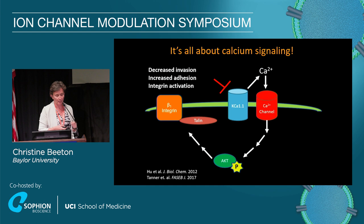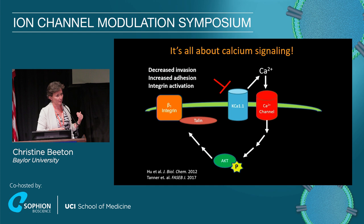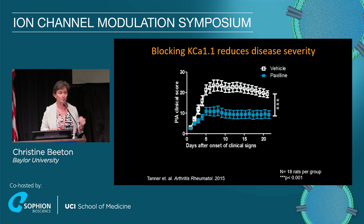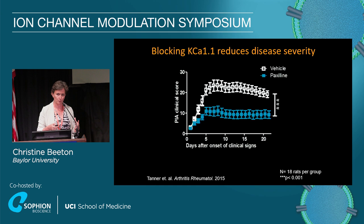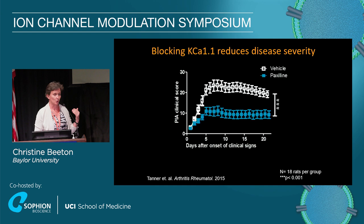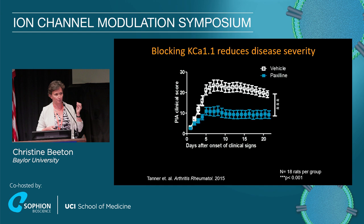That told us the channel has a function in the cell, and obviously that might not be the only function. The next question was: can we block the channel and have a benefit in treatment of a model of rheumatoid arthritis? At that point, we didn't know the composition of this channel — I'll get to that in the second half of my talk. We chose paxilin because it is a small molecule that blocks the KCA1.1 channel regardless of splice variants or regulatory subunits, and it's lipophilic so it can get pretty much everywhere in the body.